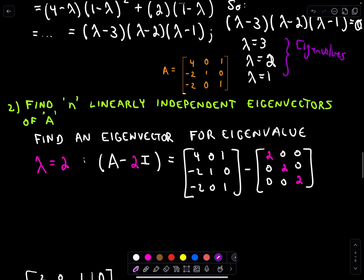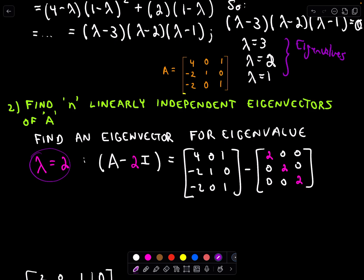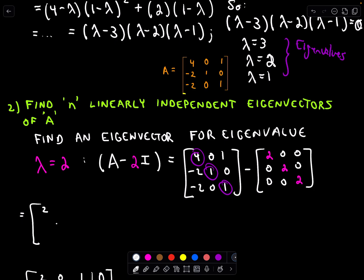Now we have to find an eigenvector for each eigenvalue. For each eigenvalue, I'm going to do it for lambda equals two and lambda equals three — it's the same process for lambda equals one, which you can practice. For lambda equals two, we take A minus two times I, which means we subtract two from all entries along the main diagonal: four minus two is two, one minus two is negative one, and one minus two is negative one. Everything else stays the same: zero, one, negative two, zero, negative two, zero. Then we tack on extra zeros and row reduce.